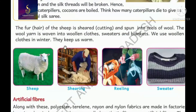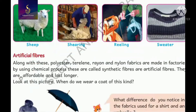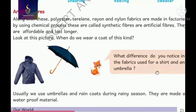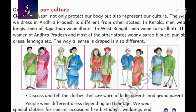Sweaters are very important in the winter season. We wear sweaters because it gets very cold - without sweaters we cannot live or breathe properly. Coming to artificial fibers: polyester, terrylene, rayon, and nylon fabrics are all made from many chemicals. After a chemical process, these are called synthetic fibers or artificial fibers. They are affordable and long-lasting.